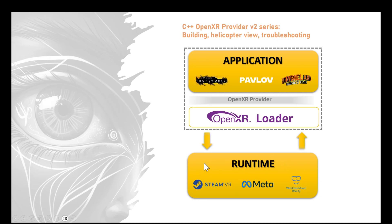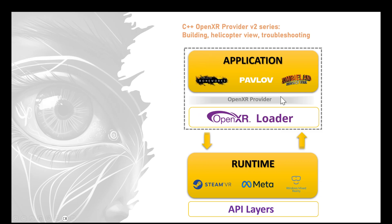One thing I haven't mentioned yet is API layers. OpenXR API layers give additional functionality to the OpenXR runtime — for example the OpenXR Toolkit, which provides extra features for the compositor for rendering. Other providers like HTC may want to extend the abilities of different runtimes based on their hardware. We'll dig in a lot deeper into the anatomy of an OpenXR application and the API layers and extensions in future videos, but for now this is a high level view of how everything is interconnected.